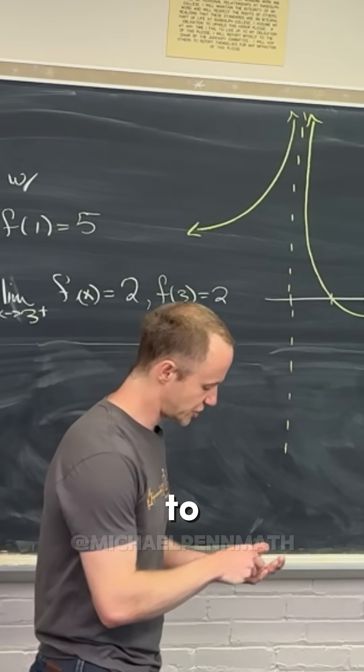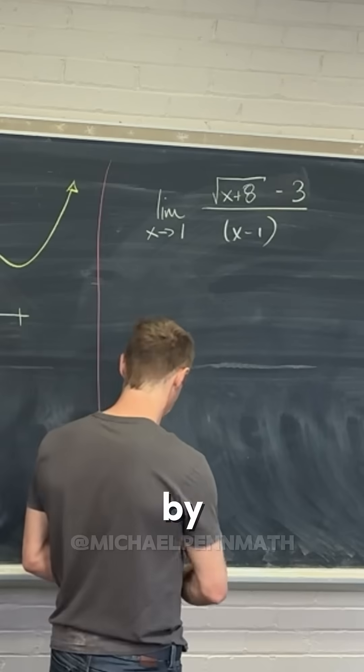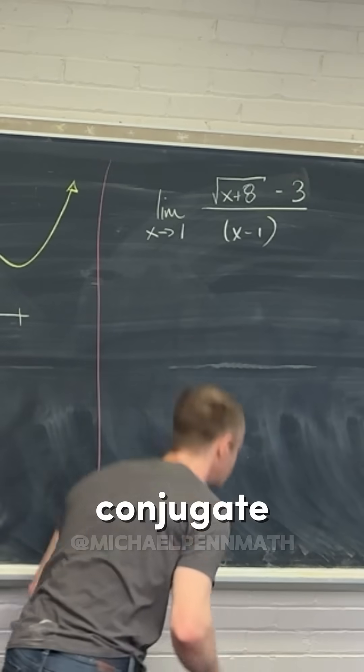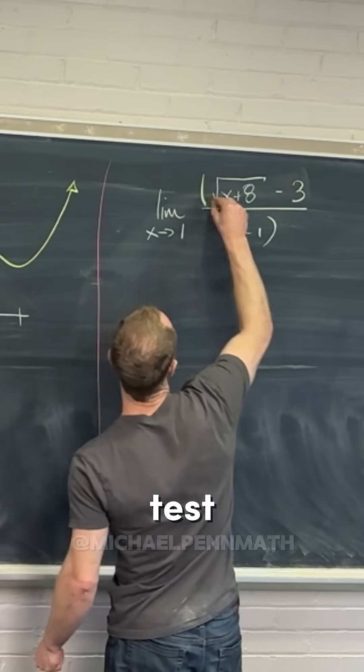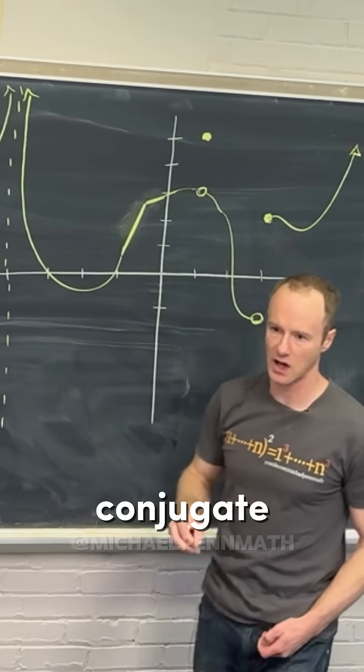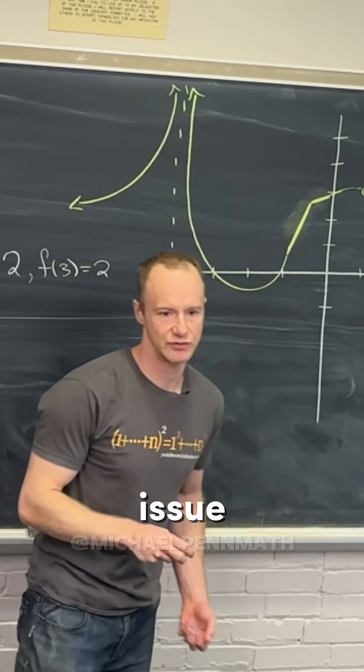In order to evaluate the limit here, we need to multiply it by something called the radical conjugate. A lot of people on the test multiplied by the radical conjugate but had a little bit of an issue with simplification.